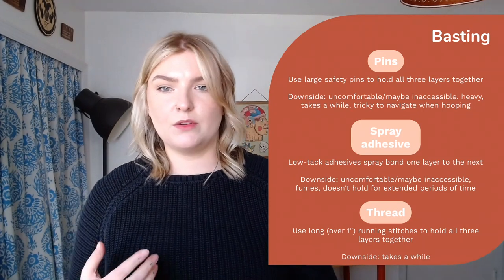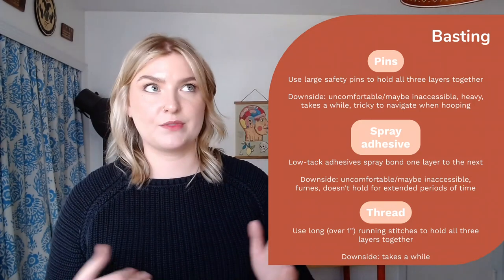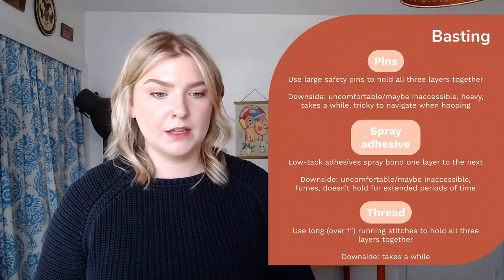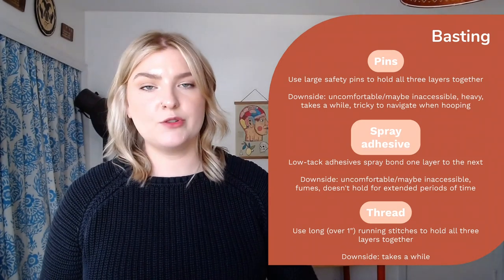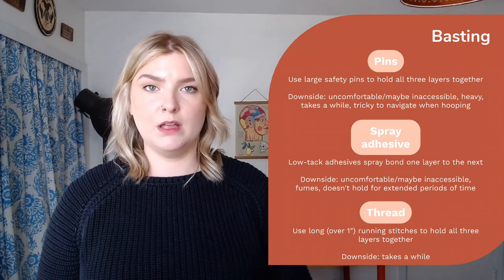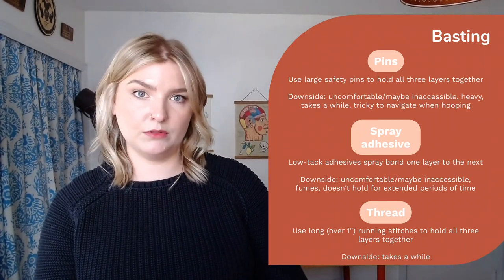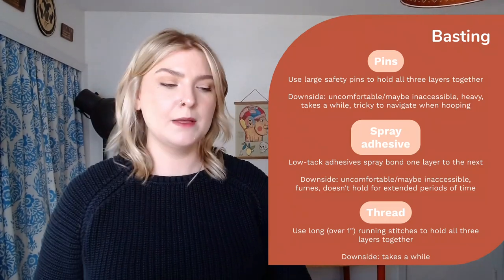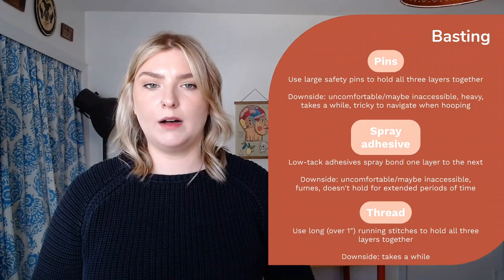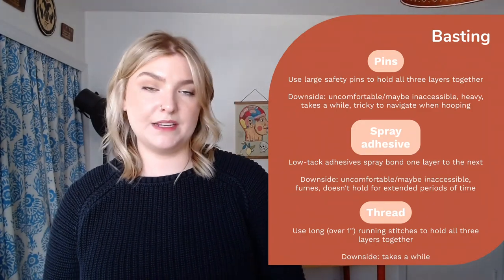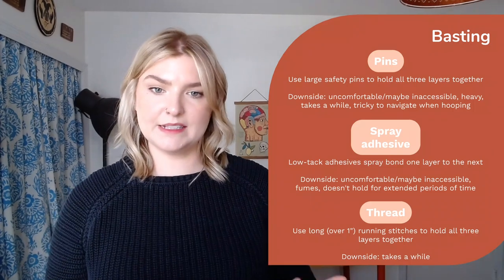Finally, there is thread basting. Thread basting uses a long running stitch, usually at least an inch long, sometimes three to four inches long — you can do it by hand or at the machine. Your domestic machine does have some basting stitches, some really long ones. You can also do this using the BSR. On your Q-series machines in a table — the Q16, Q16 Plus, or Q20 in a table, and the 24 also has basting, but you don't need to baste if you're on a frame. If you're working on a table, you can use BSR mode three to free motion baste your quilt. You can also use BSR mode three on the B770QE Plus.